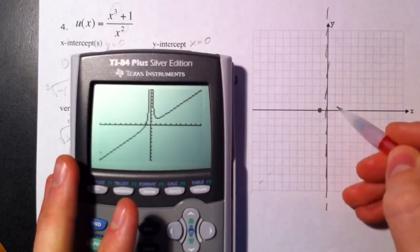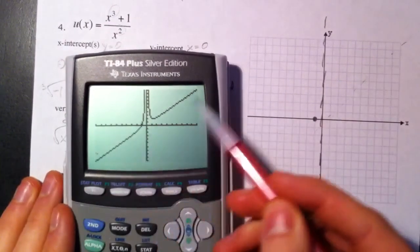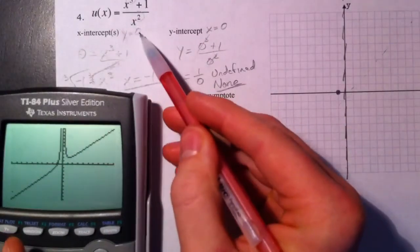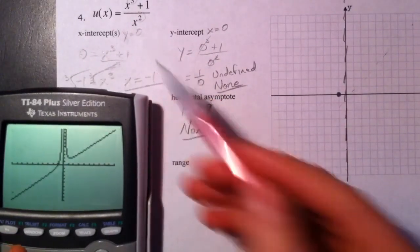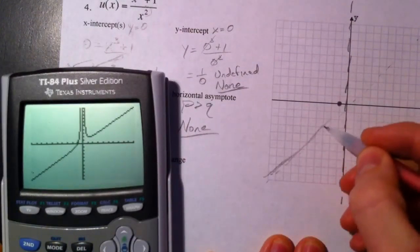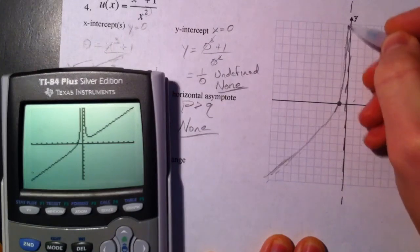In this case, the slant asymptote is y equals x because x³ divided by x² is going to give you x. But in our case, we're going to just utilize the graphing calculator as a tool to help us out with what the graph looks like.